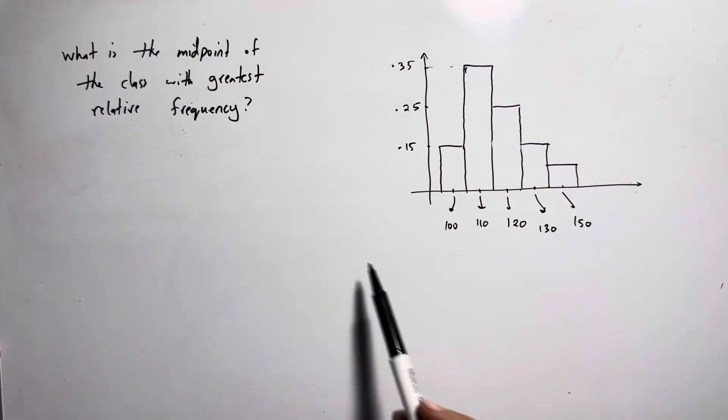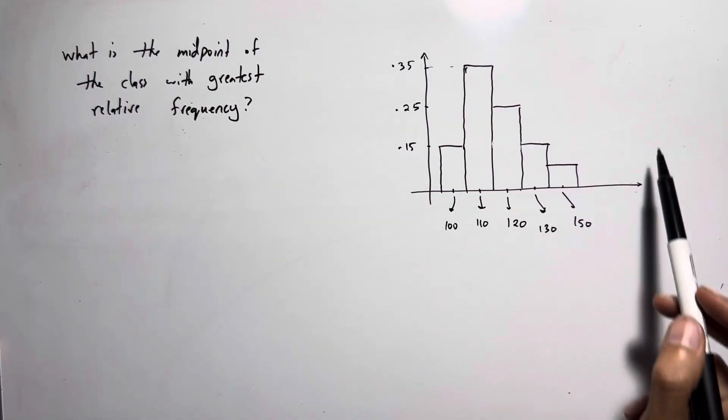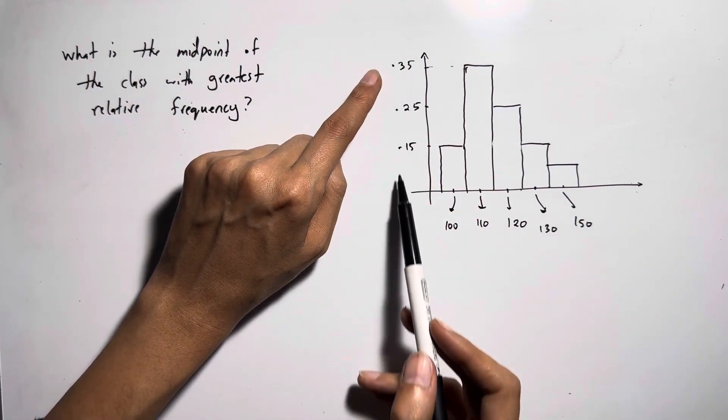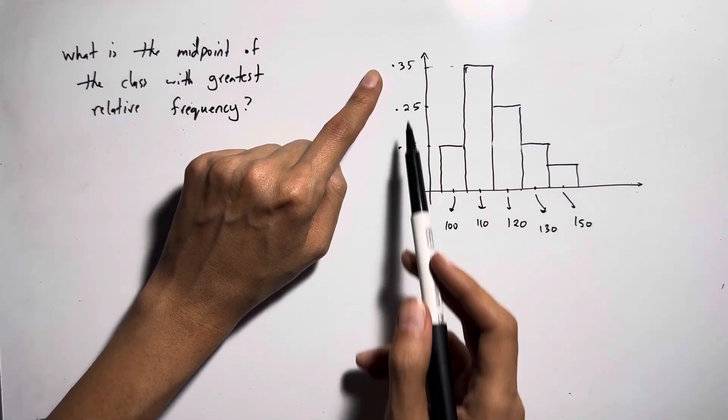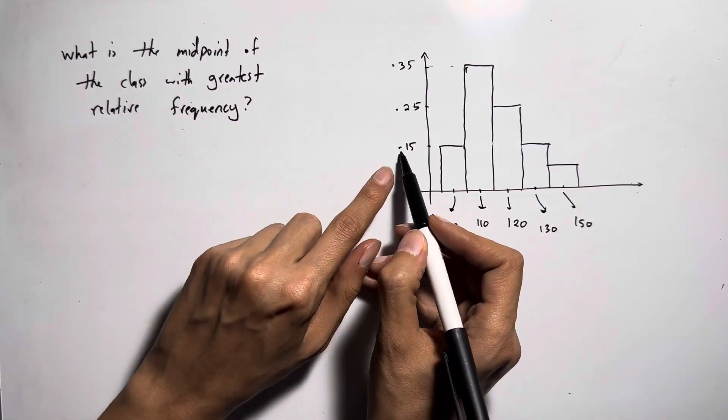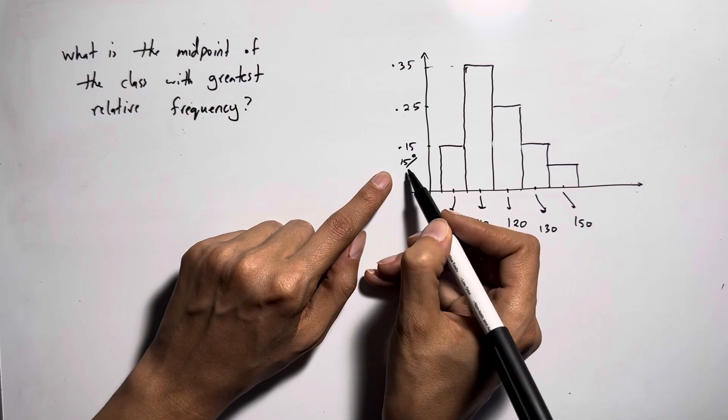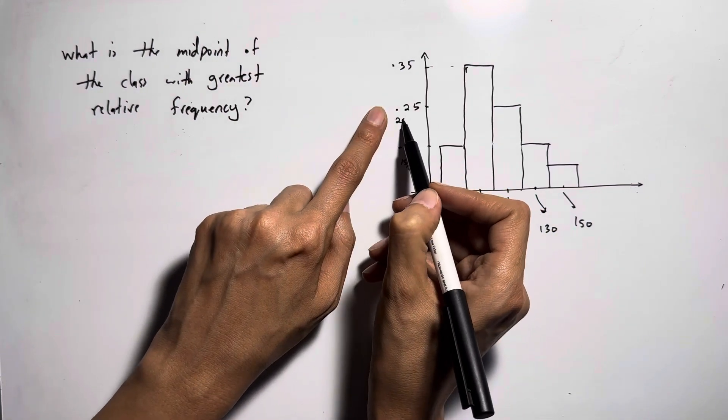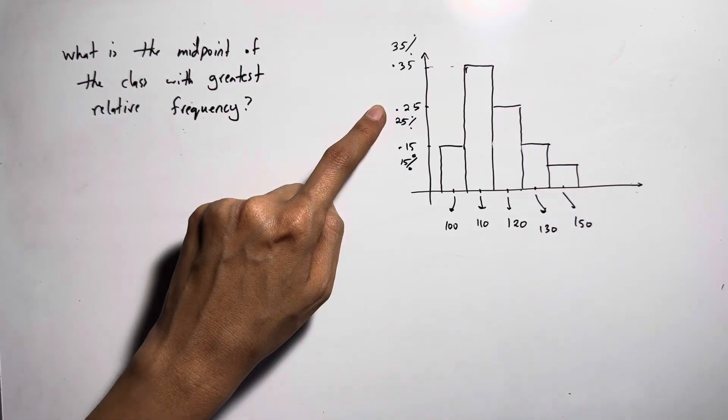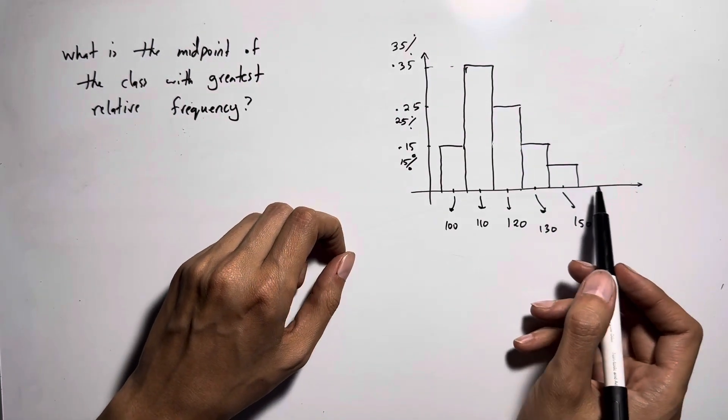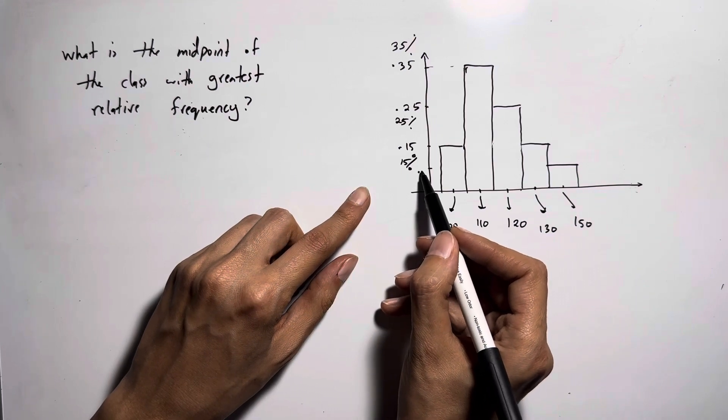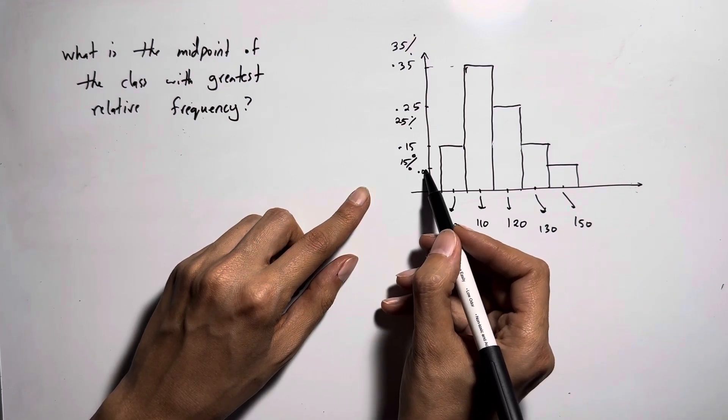In this question we have a relative frequency distribution. It's a relative frequency distribution because on the vertical axis you have everything in percent or decimal. Point 15 is 15 percent, point 25 is 25 percent, point 35 is 35 percent, and so on. So it seems like this is just five percent, so point zero five or five percent for this one.